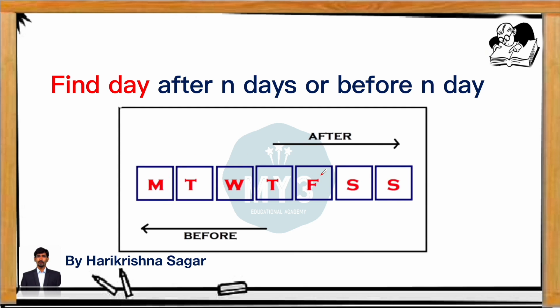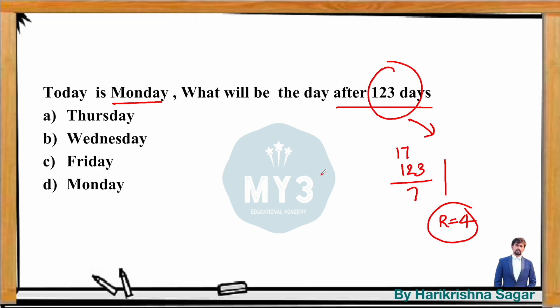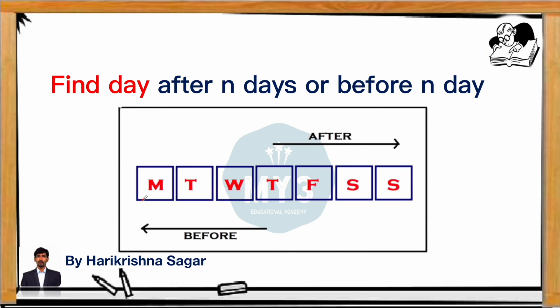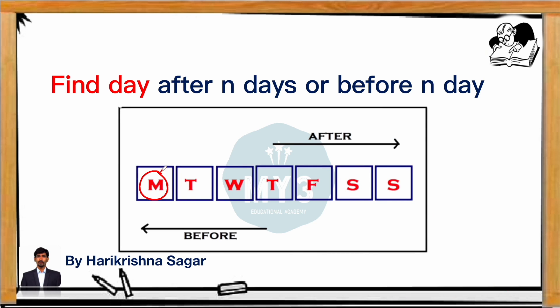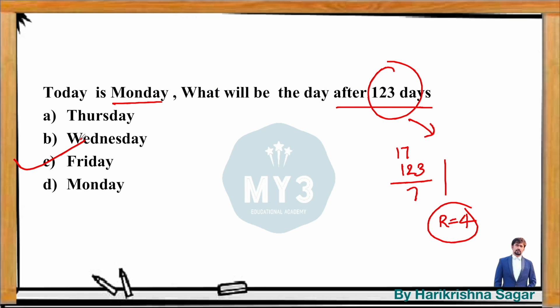To summarize: if today is Monday and they ask what day it is after 123 days, divide 123 by 7 to get remainder 4. Move forward by 4 days from Monday, and you get Friday.